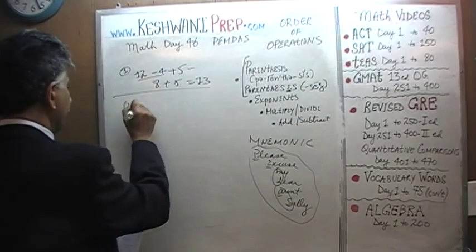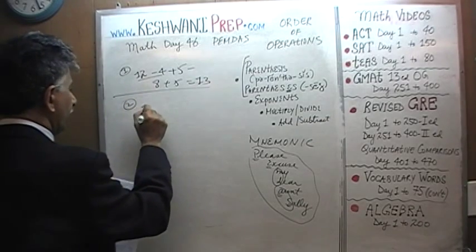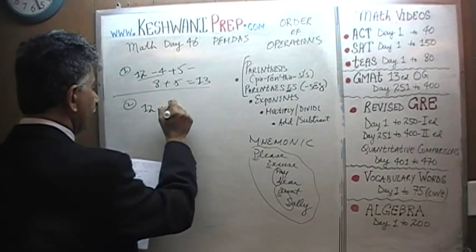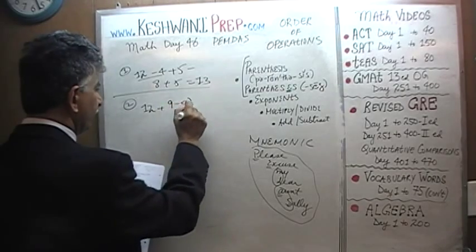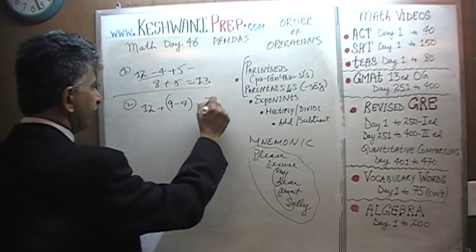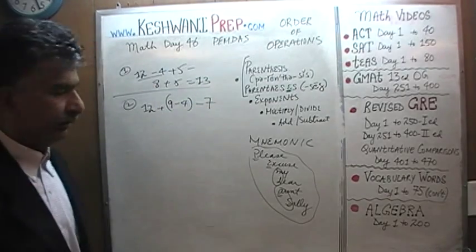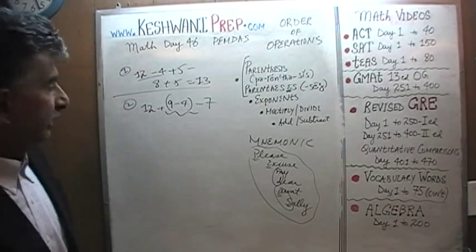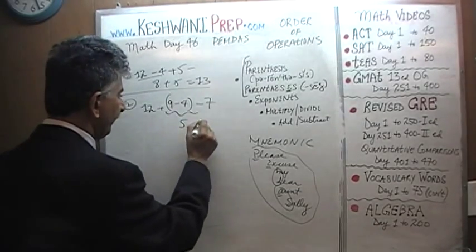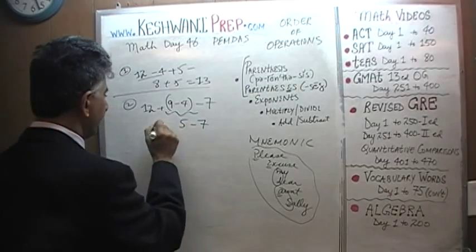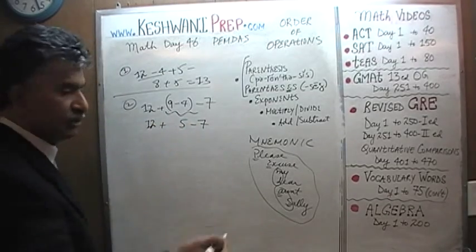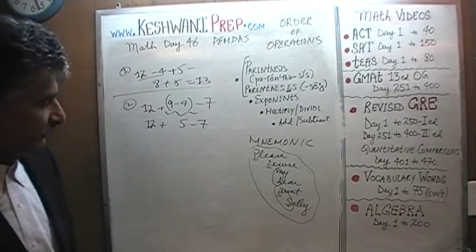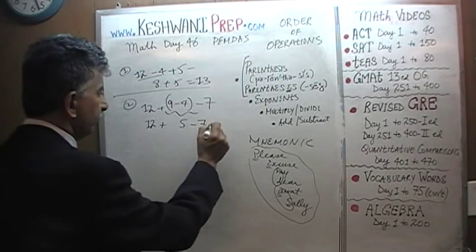Number 2: 12 + (9 - 4) - 7. Here we see parentheses, so we take care of that first. 9 minus 4 is 5, and after that it doesn't matter which order we go. 12 plus 5 is 17, and 17 minus 7 is 10.